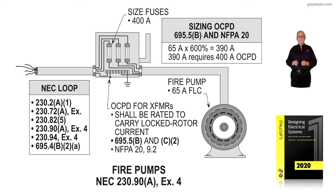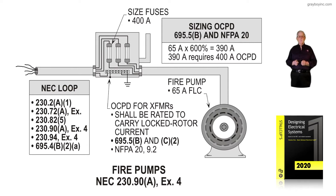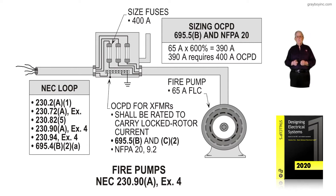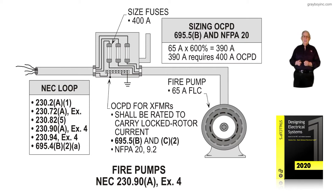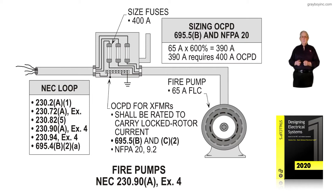That would be a 400A device. The conductor at 65A full load current would be sized at 125% of 65, so it'd be a number 4 conductor, but it'd be on a 400A device. The overcurrent device would be sized to carry that fire pump until failure occurred.